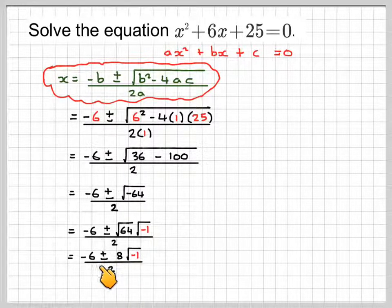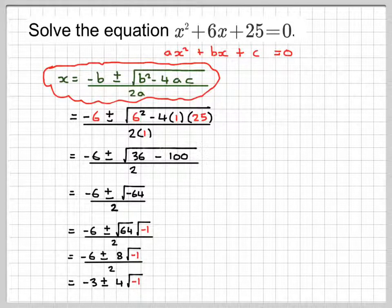Both 8 and minus 6 are divisible by 2. So we would end up with minus 3 plus or minus 4 times square root of minus 1.